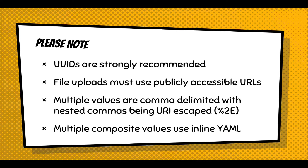Some notes about importing data from a CSV: UUIDs are strongly recommended — they make it possible to easily update existing records. File uploads must use a publicly accessible URL, so any URL you insert in the CSV must be publicly available. For multiple values, we put them in one column, comma-delimited. But if there are nested commas, you need to URI-escape them as %2C. It's very unlikely that most multi-value elements will have commas, but we need to cover that use case. For the most complex element — a multiple composite value element — we use inline YAML because it's a nested array with multiple values.